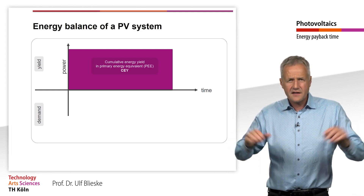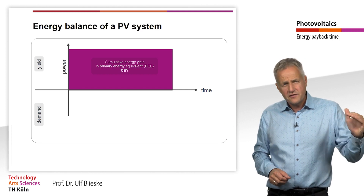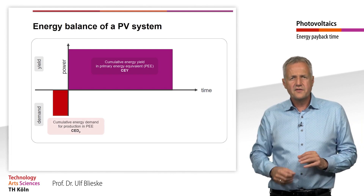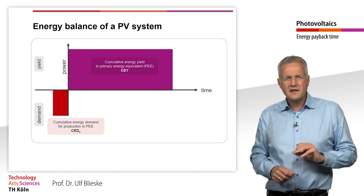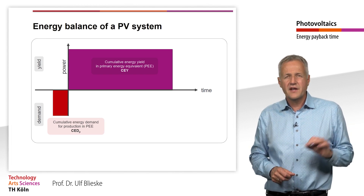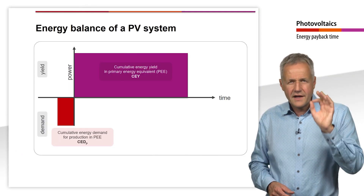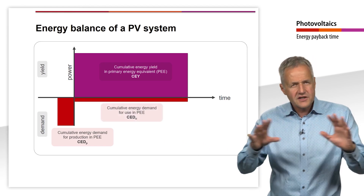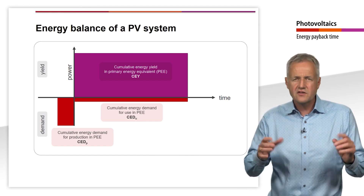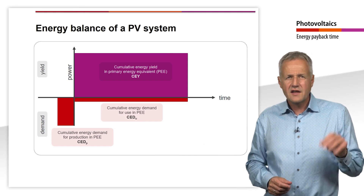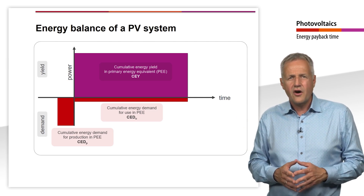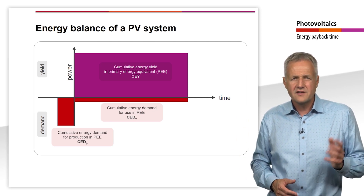Areas below the x-axis show the cumulative energy demand. The area below the x-axis to the left of the zero point is the cumulative energy input for production or installation in relation to the primary energy. The red area below the purple area describes the cumulative energy input for the operation of the plant in relation to the primary energy. This can be, for example, energy used for maintenance or cleaning of the installation or for lighting of an open-space installation.